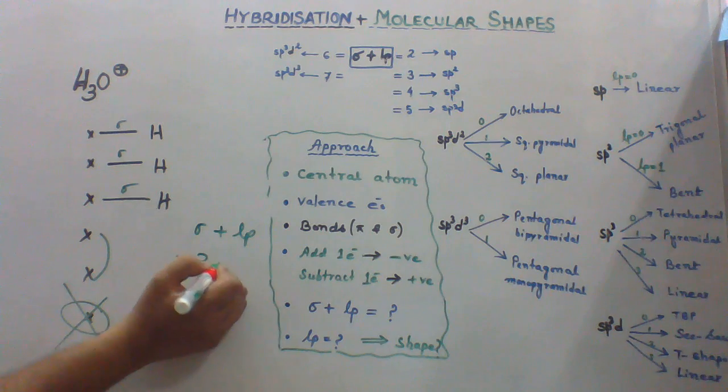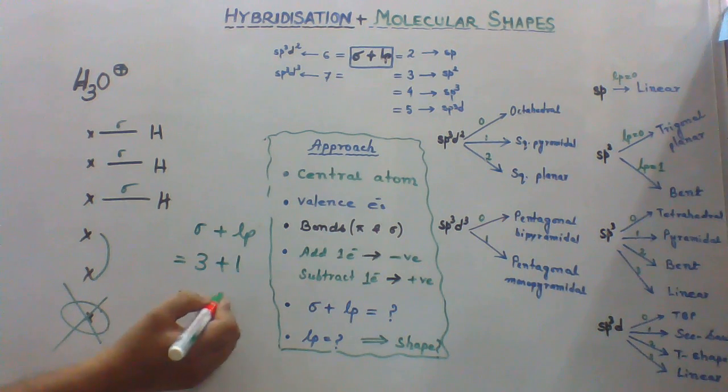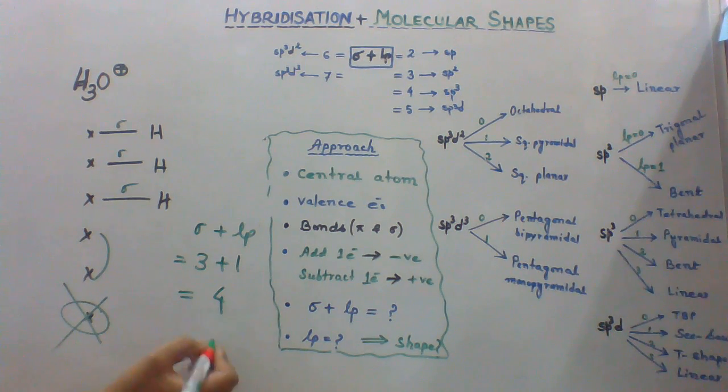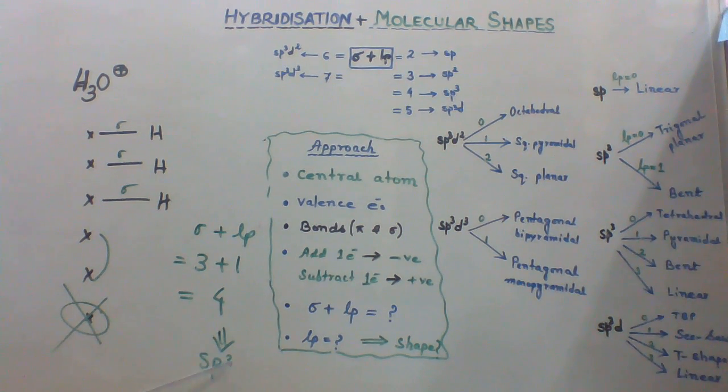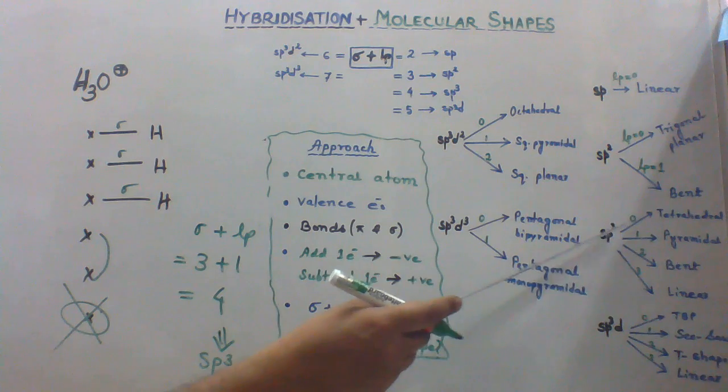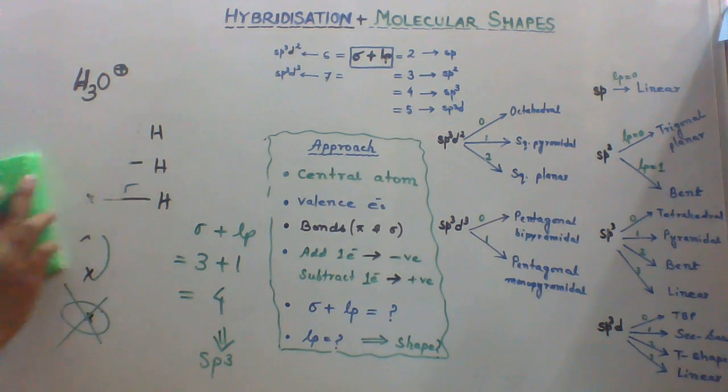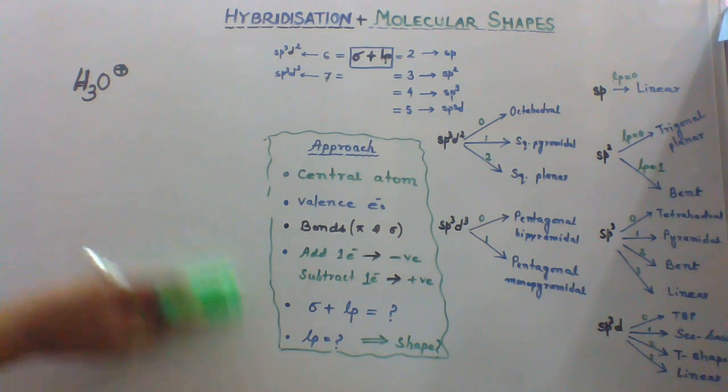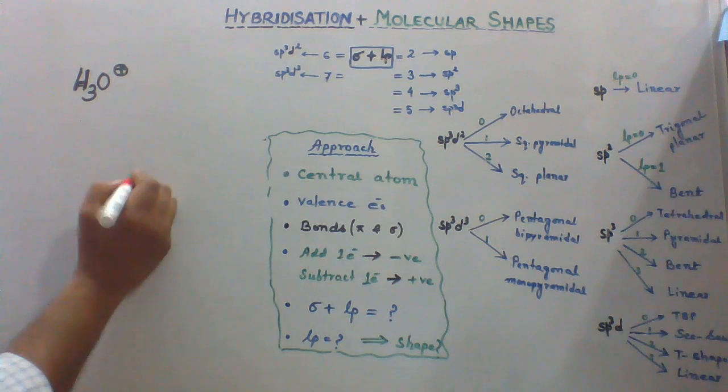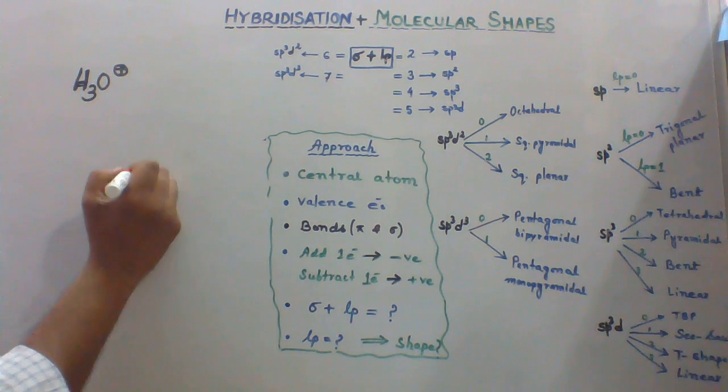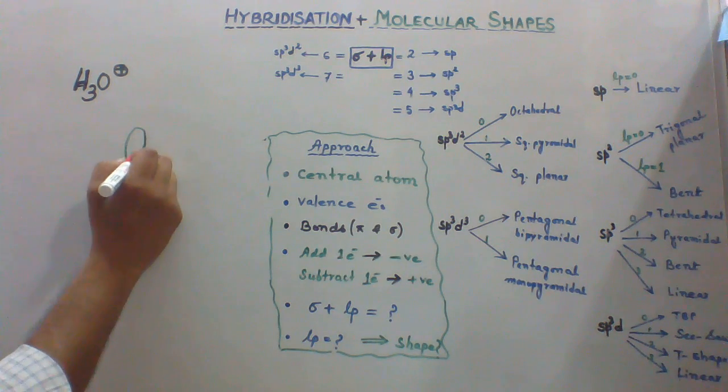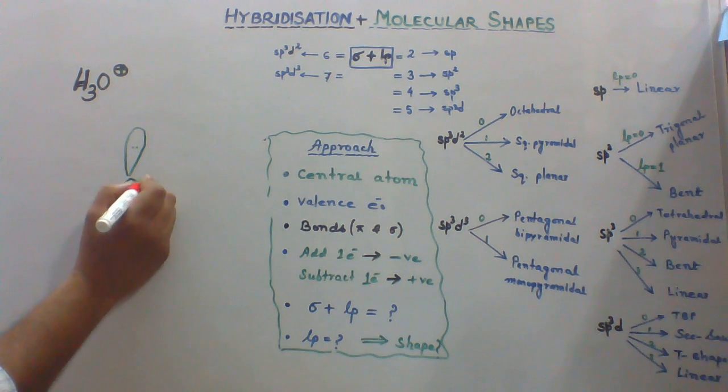And we have now 3 sigma bonds, 1 lone pair. Sigma bonds 3, lone pair 1, so it is 4. This corresponds to sp3 hybridization. Sp3 hybridization with 1 lone pair is pyramidal. So hydronium ion will have pyramidal shape. It is similar to that of ammonia.